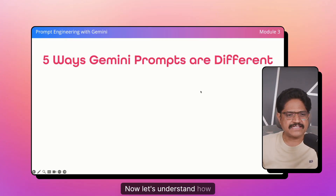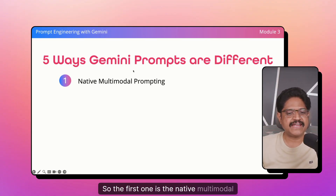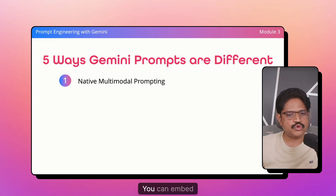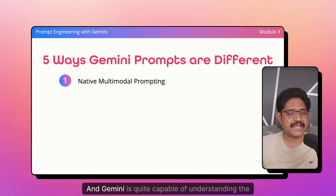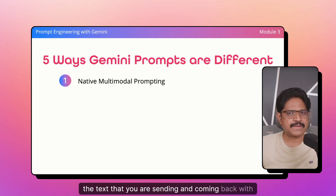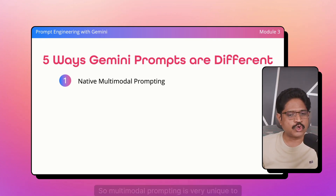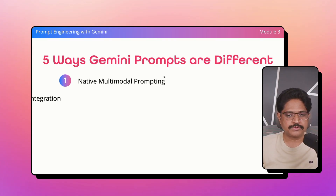Now let's understand how prompting Gemini is different from other LLMs. The first difference is native multimodal prompting — you can embed text and images and send that as a single prompt to Gemini. Gemini is quite capable of understanding the content within the image and the text you are sending, and coming back with the exact response. Multimodal prompting is very unique to Gemini.